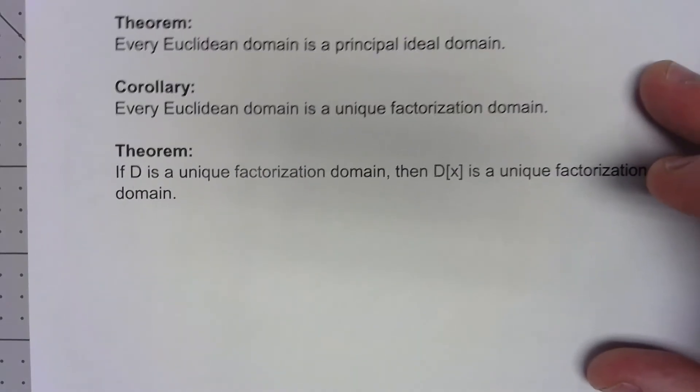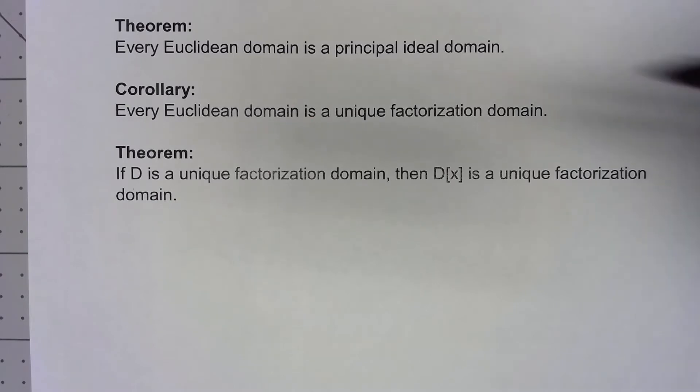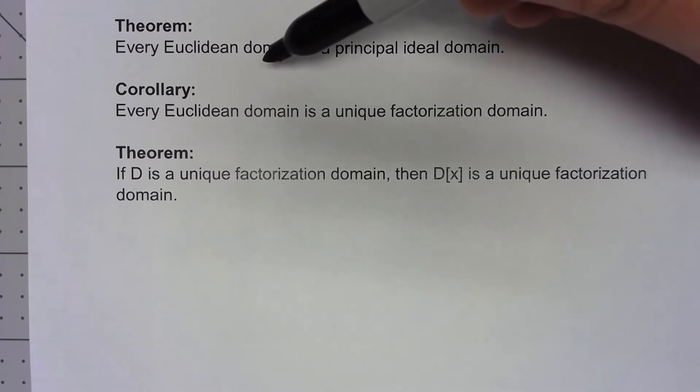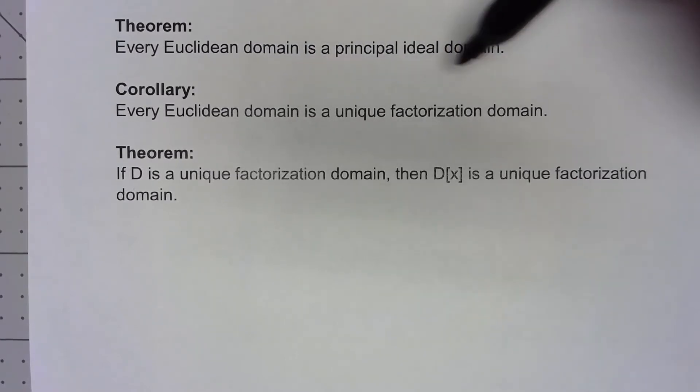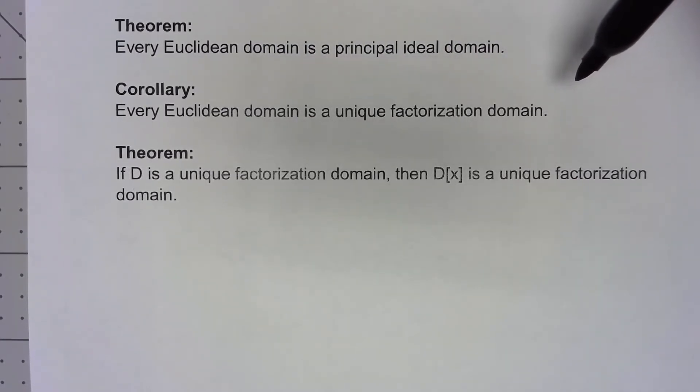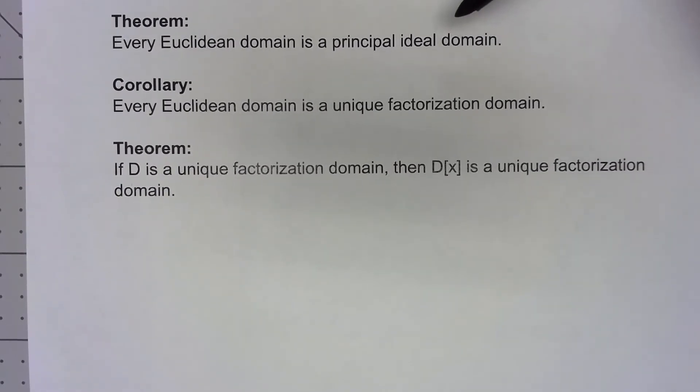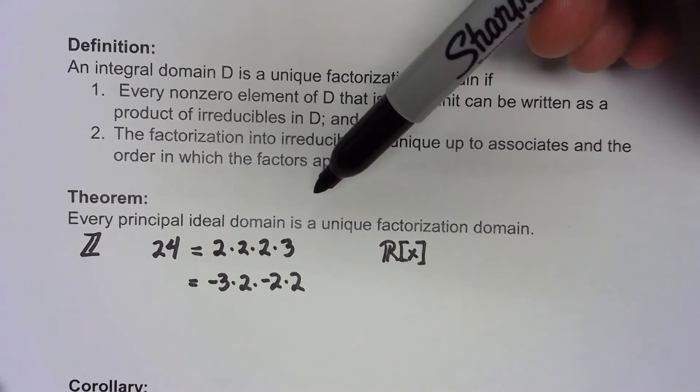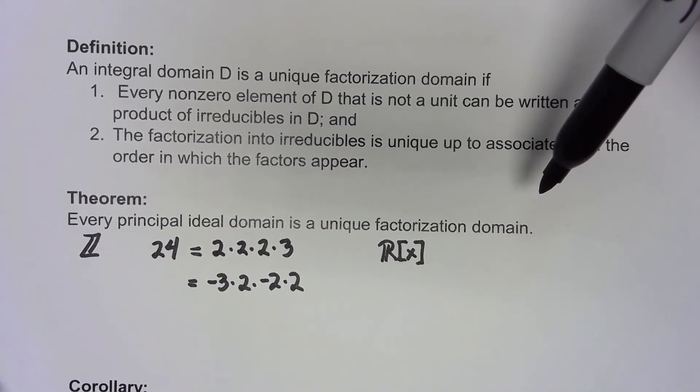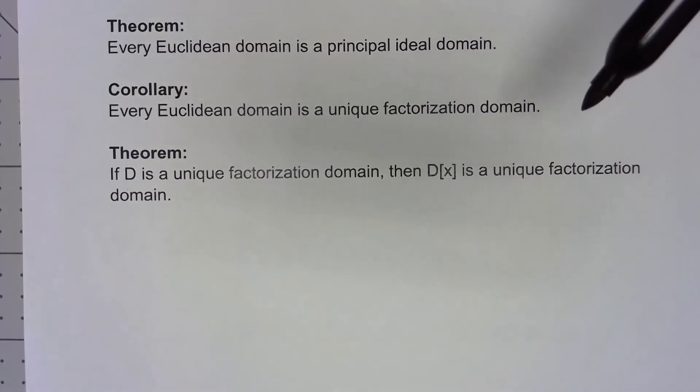Now with this idea of Euclidean domain, every Euclidean domain is going to be a principal ideal domain. Also every Euclidean domain is going to be a unique factorization domain. Once again it kind of comes down to, if every Euclidean domain is a principal ideal domain and we said earlier every principal ideal domain is a unique factorization domain, that corollary easily follows.